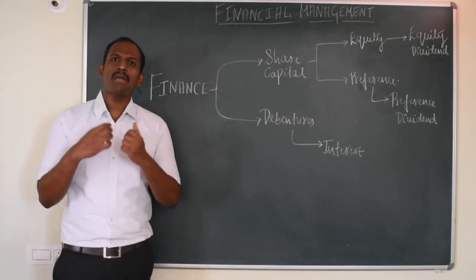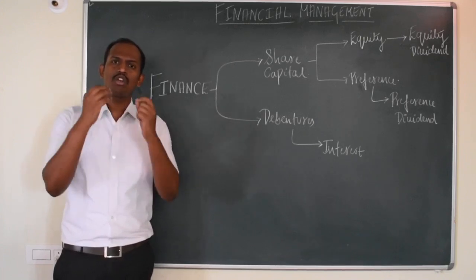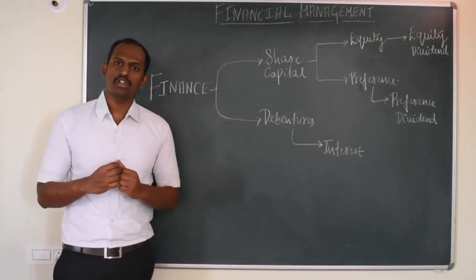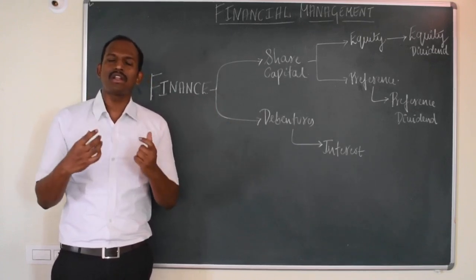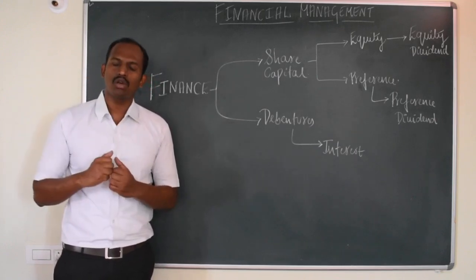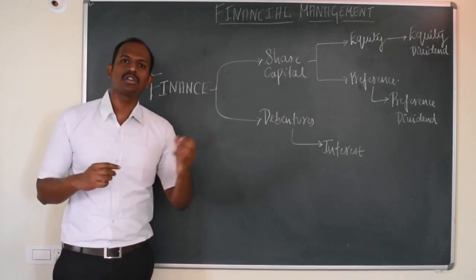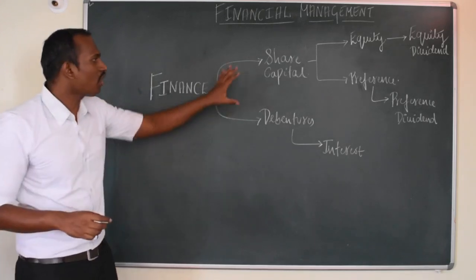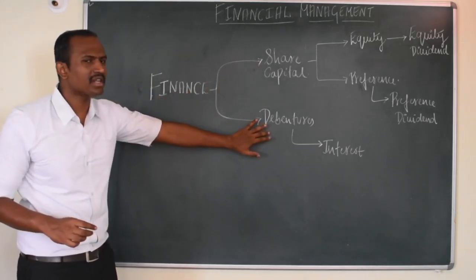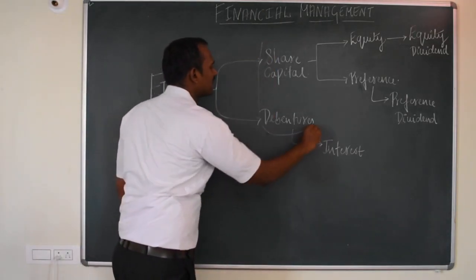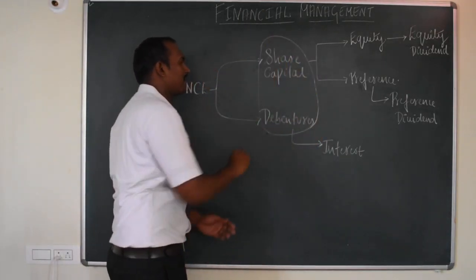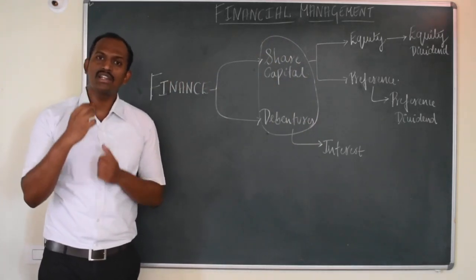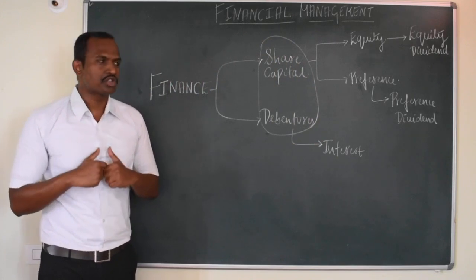What is capital structure? Capital structure is a combination of two simple words — capital and structure. Capital is nothing but funds towards a business organization. Structure is a proportion or a combination. The combination of share capital along with debt capital is called capital structure.